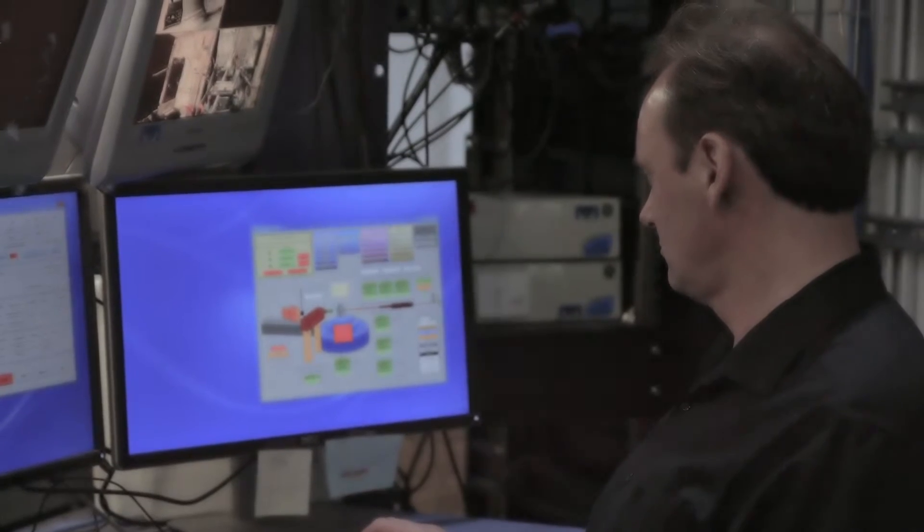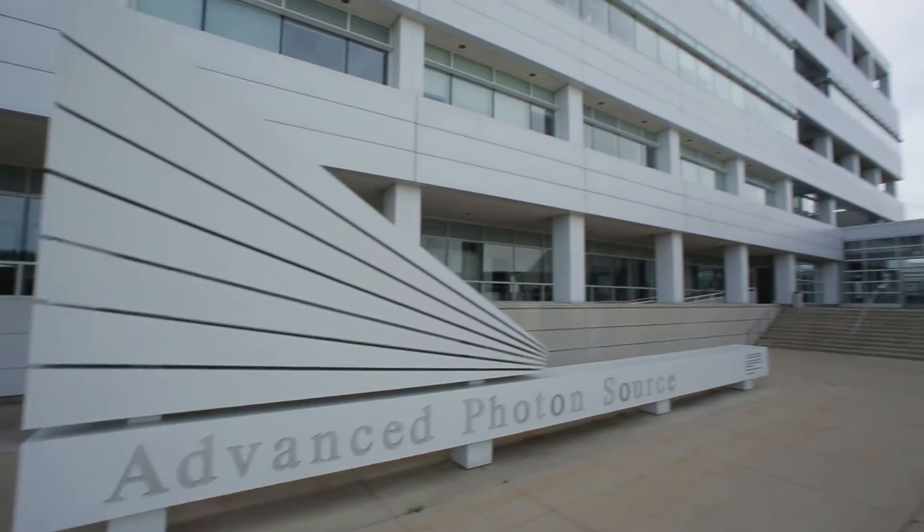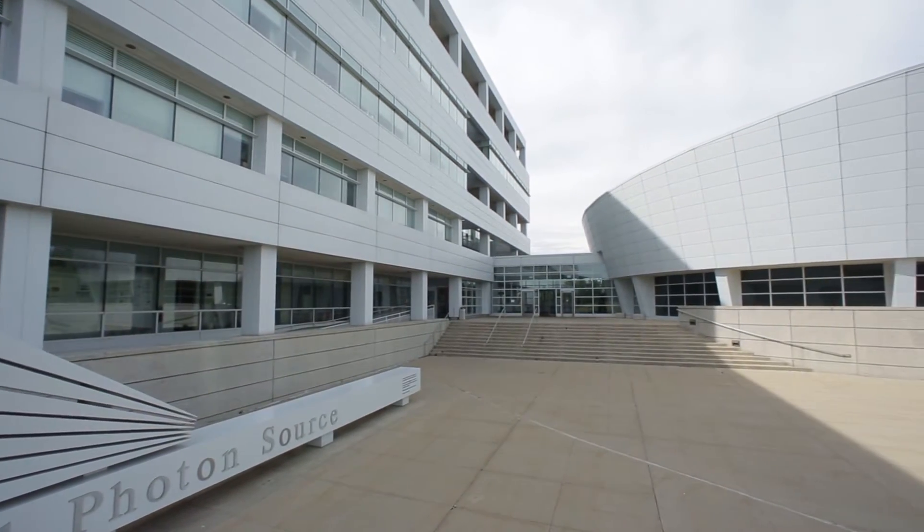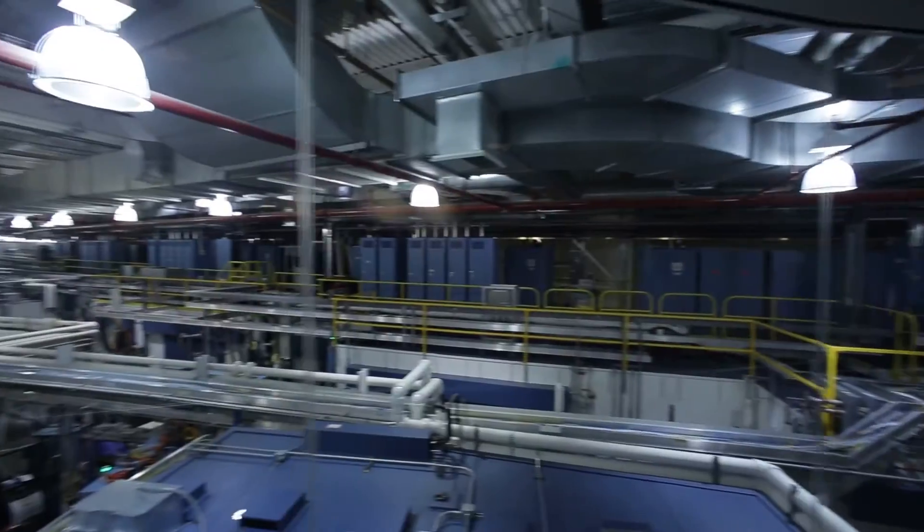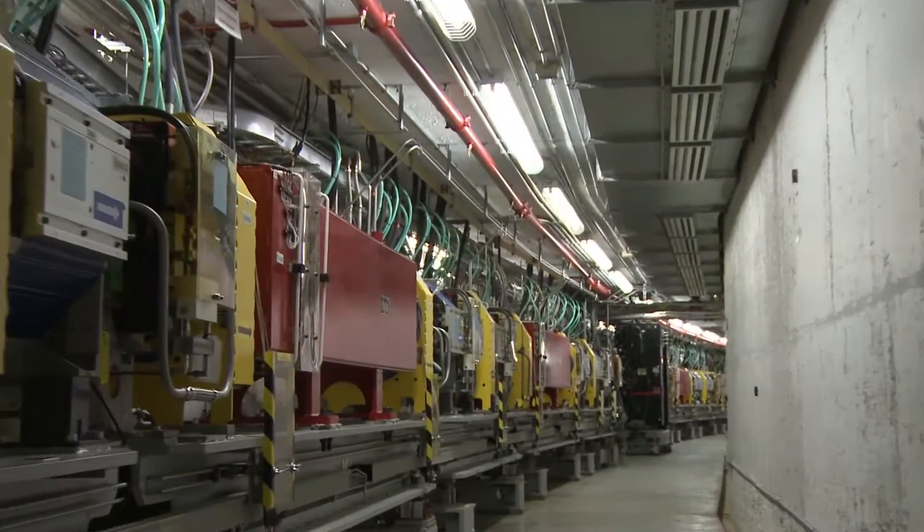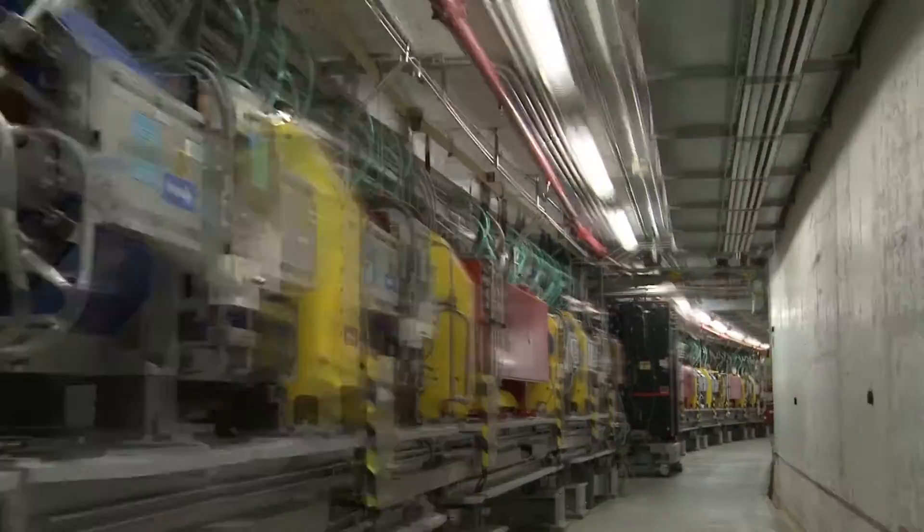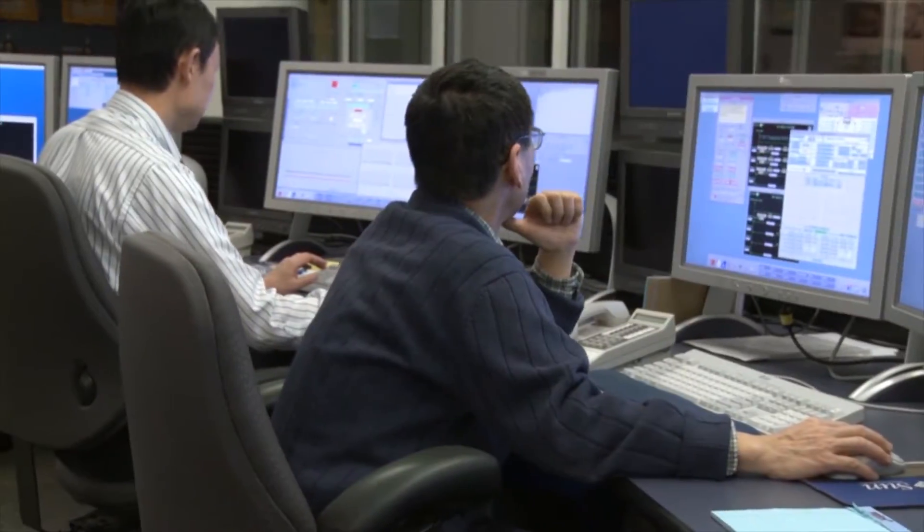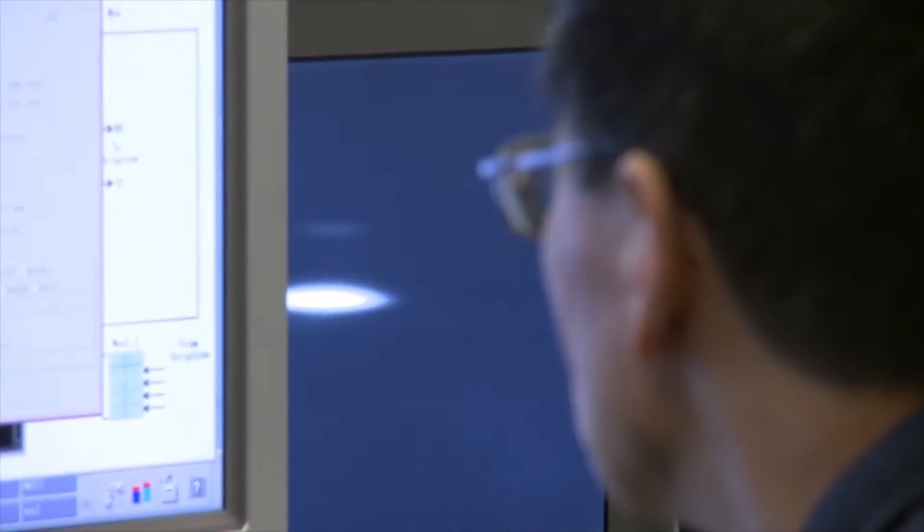HPCAT's home is the Advanced Photon Source, or APS, one of the largest research facilities funded by the US Department of Energy Office of Science. The APS is a giant synchrotron nearly a mile around where electrons are accelerated to move at extremely high speeds, almost as fast as the speed of light. The APS is one of the brightest sources of x-rays in the world.